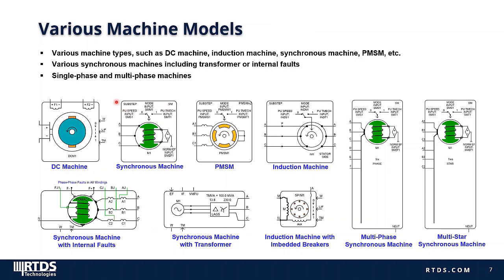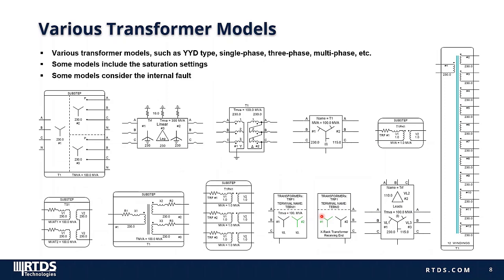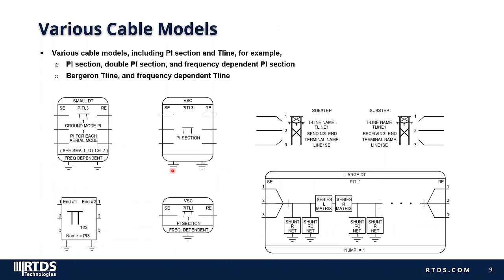We also provide various machine models, including DC machine, induction machine, synchronous machine, PMSM, and others. These machines can emulate different loads in aircraft electrical systems. For some special applications, some synchronous machines are modeled including transformer or internal faults. Most machines can be configured as single-phase or multi-phase. There are many transformer models in RSCAD, including single-phase, three-phase, and multi-phase transformers, with winding connection types including YY and Y-delta. Some models also consider internal faults for special tests. We also have cable models including Pi-section and T-line models — regular Pi-section, double Pi-section, frequency-dependent Pi-section, Bergeron T-line, and frequency-dependent T-line models.